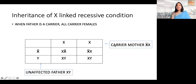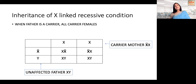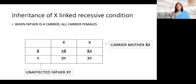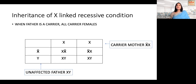If the father is affected with an X-linked recessive condition (X'Y) and the mother is not affected and not a carrier (XX): drawing the box, all daughters will be XX' — carriers — and all sons will be XY — unaffected. None of the children will be affected, but 100% of the daughters will be carriers. That's because daughters become daughters only when they inherit the X chromosome from the father, and the father's X is mutated. Those daughters will then pass it to the next generation where females will be carriers and males will be affected.